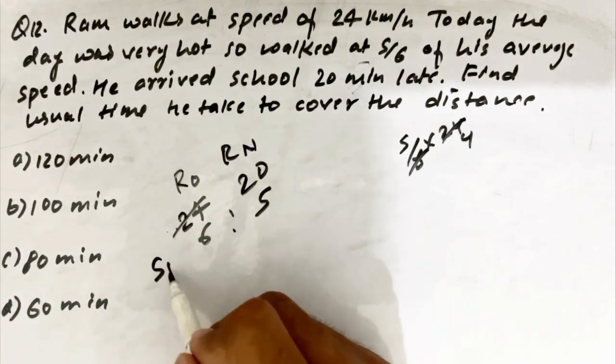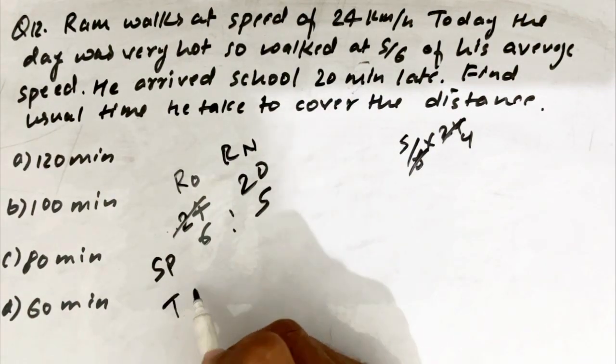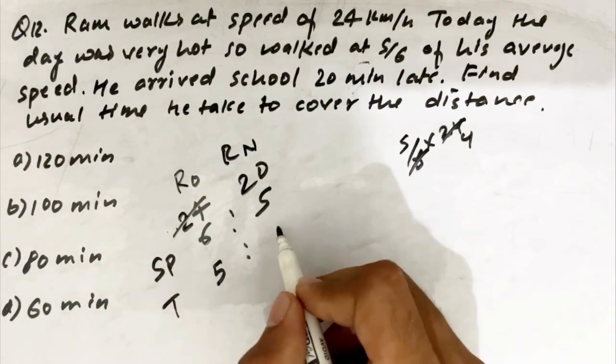6 is to 5. Speed ratio. Speed ratio, the time ratio is reciprocal. 5 is to 6.